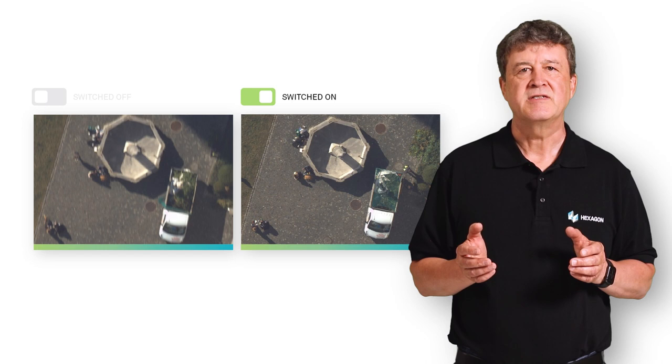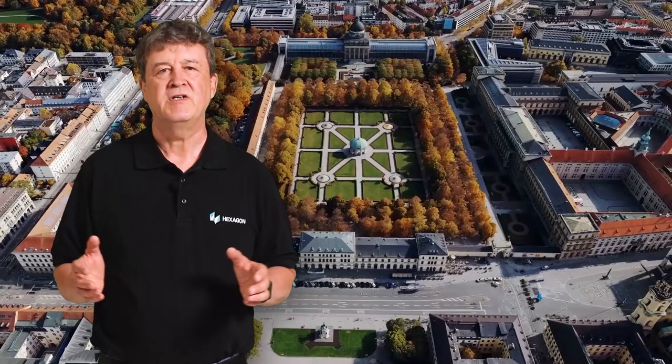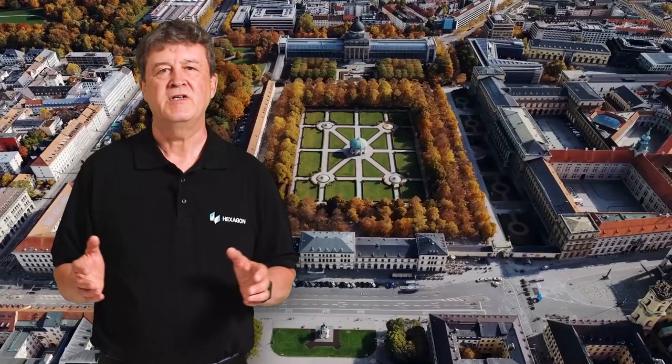Here is another great example where the difference is highly visible. I would like to show you how mechanical FMC looks on the final data products. Here is a fantastic example of Munich. As you can see, the data was collected in late autumn at a very low sun angle of 25 degrees. Despite the low lighting conditions, every detail is visible even in shadow areas and urban canyons.